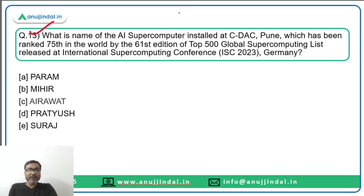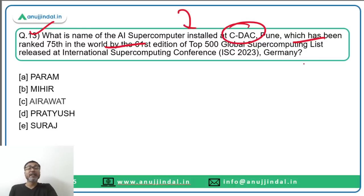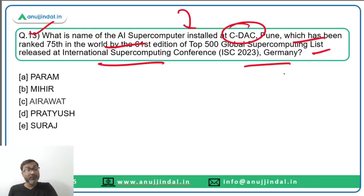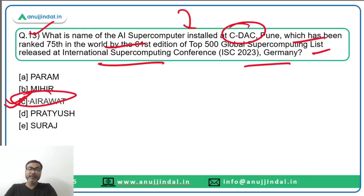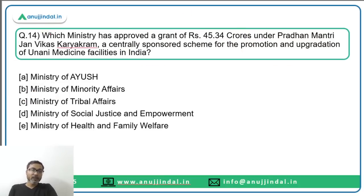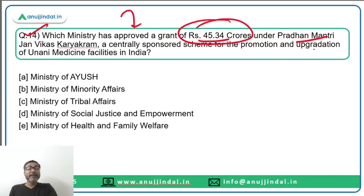Question thirteen: The AI supercomputer installed at CDAC Pune, named AIRAWAT, has been ranked 75th in the world by the 61st edition of the Top 500 Supercomputing List, released at the International Supercomputing Conference held in Germany. Option C is the correct answer.